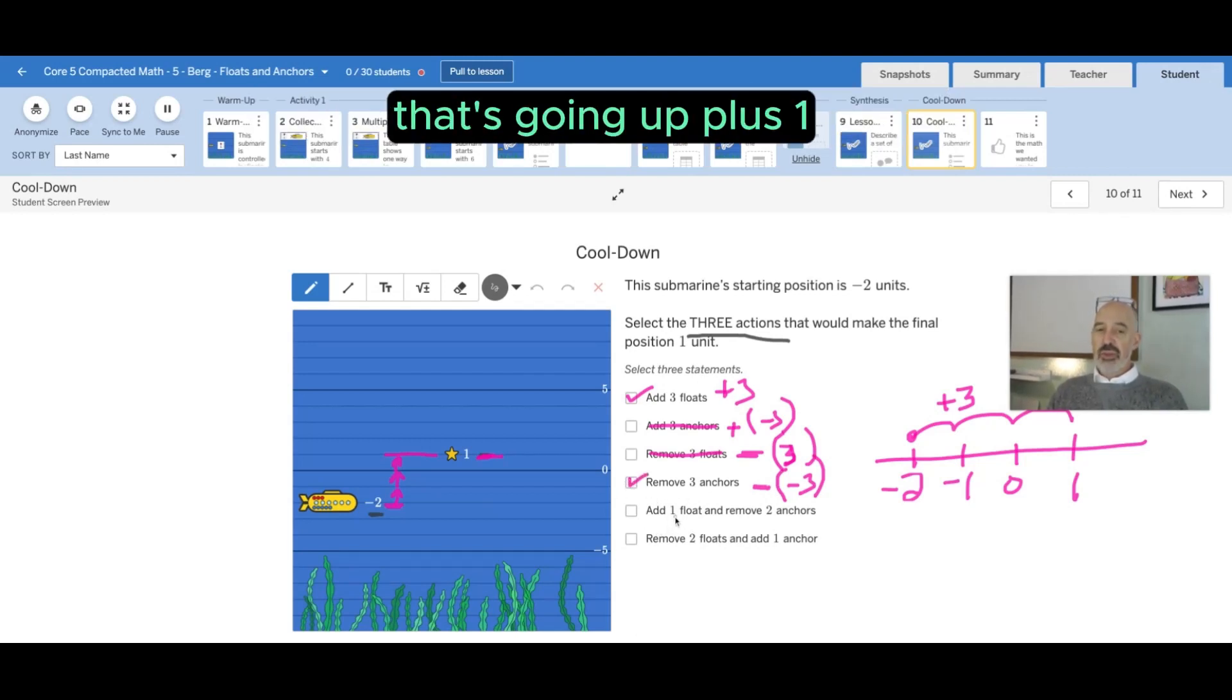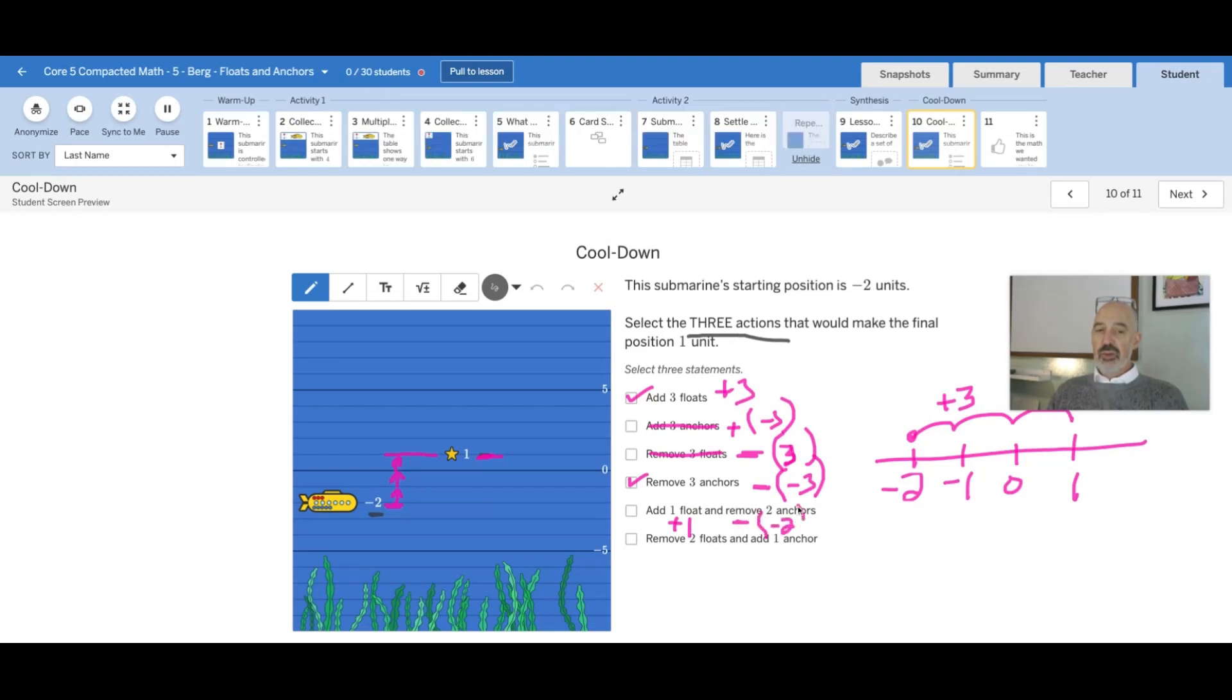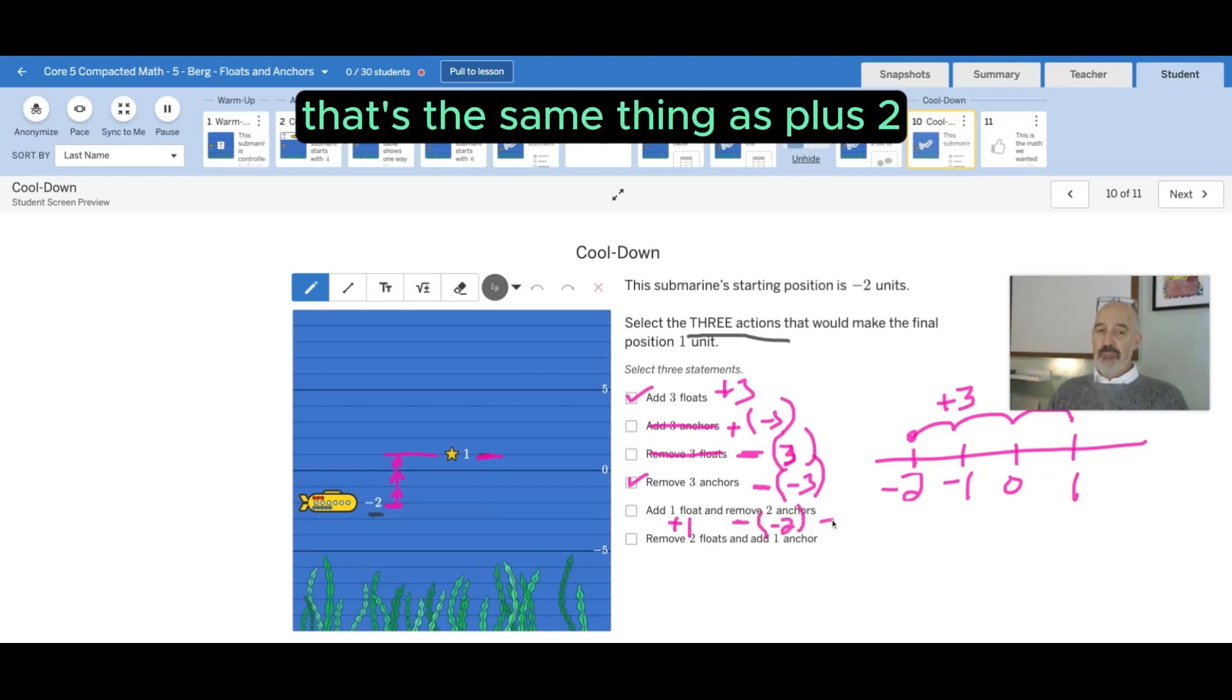Now out of these bottom two, if you add a float, that's going up plus one. If you remove two anchors, removing is subtracting, anchors are negative, minus negative two. That's the same thing as plus two. We've talked about why, so it's got to be this one.